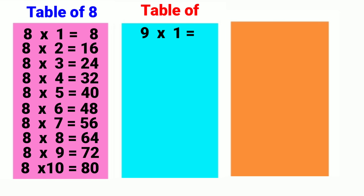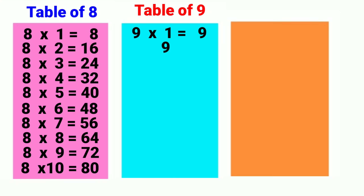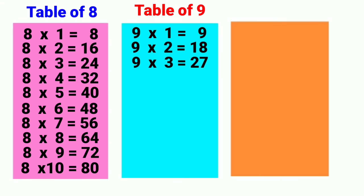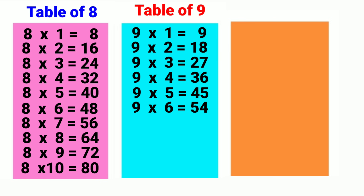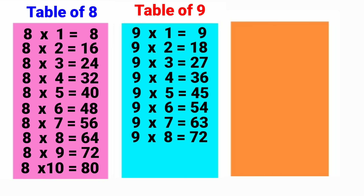9, 1's are 9. 9, 2's are 18. 9, 3's are 27. 9, 4's are 36. 9, 5's are 45. 9, 6's are 54. 9, 7's are 63. 9, 8's are 72. 9, 9's are 81. 9, 10's are 90.